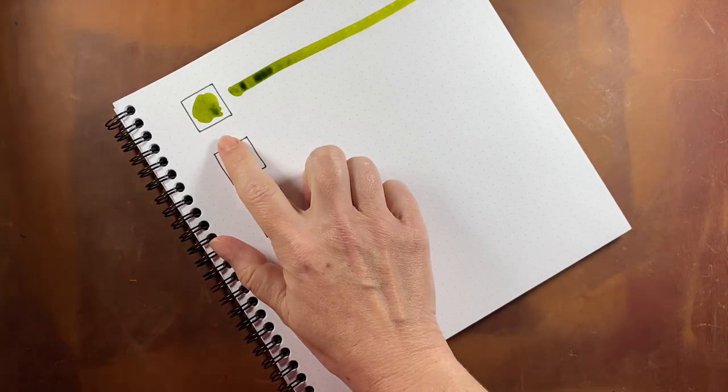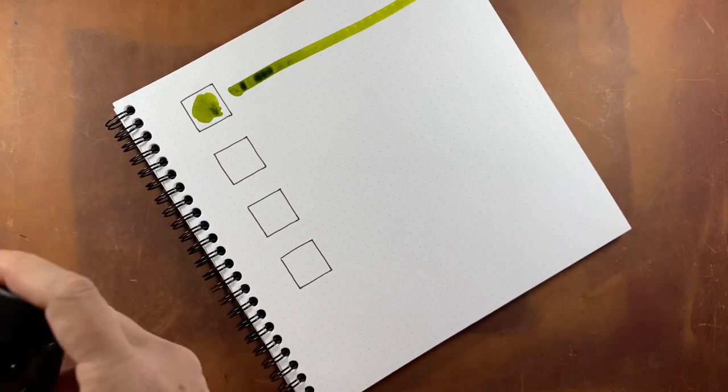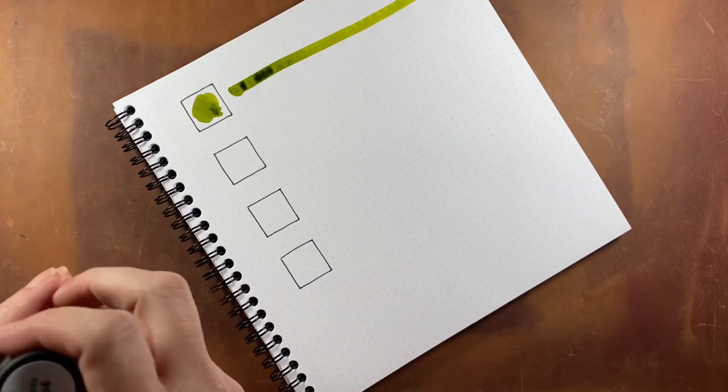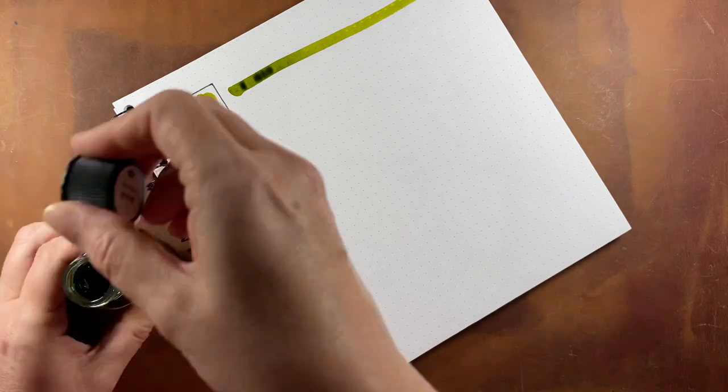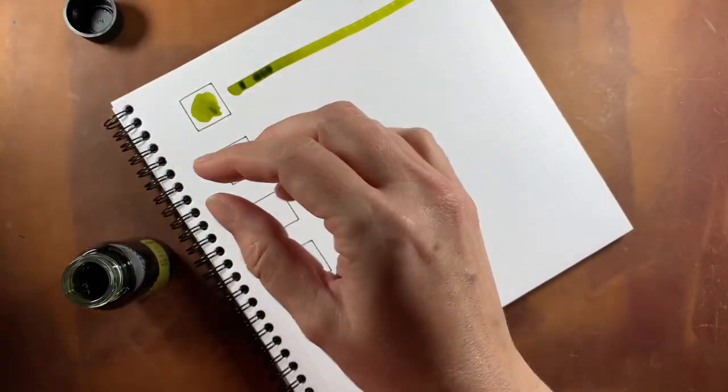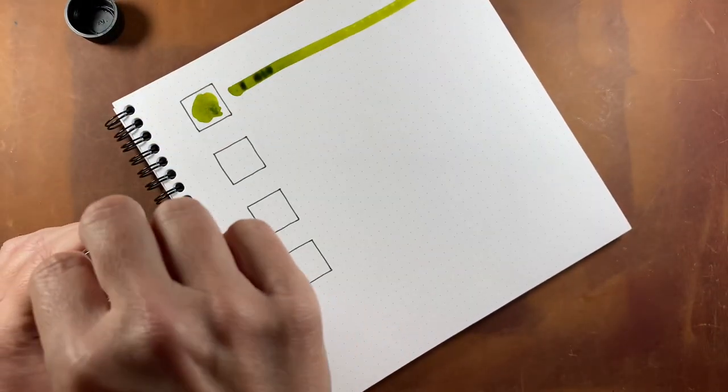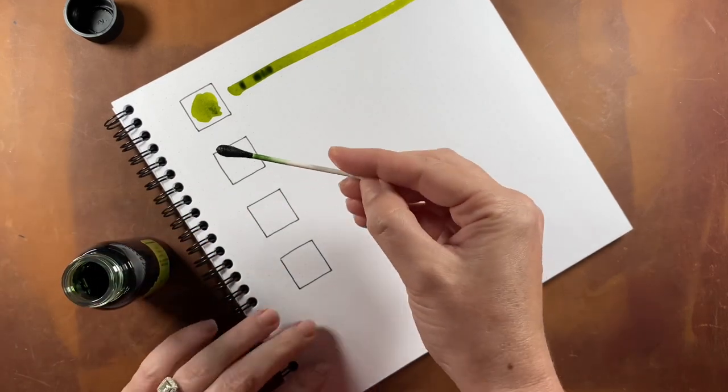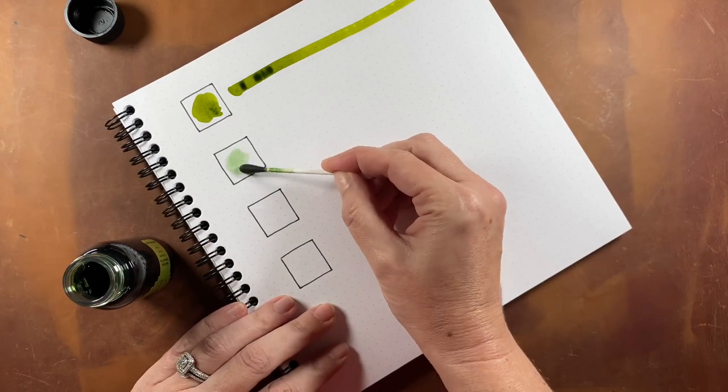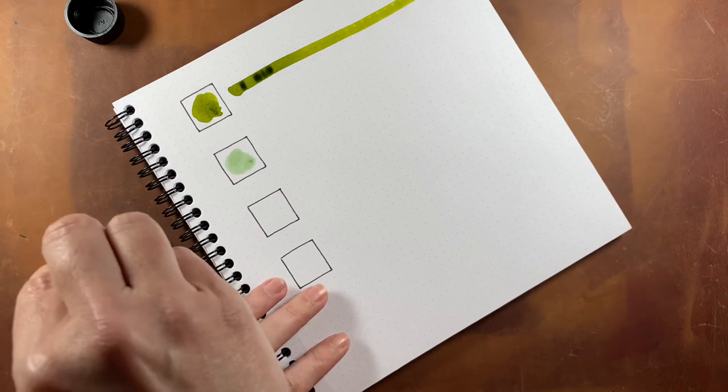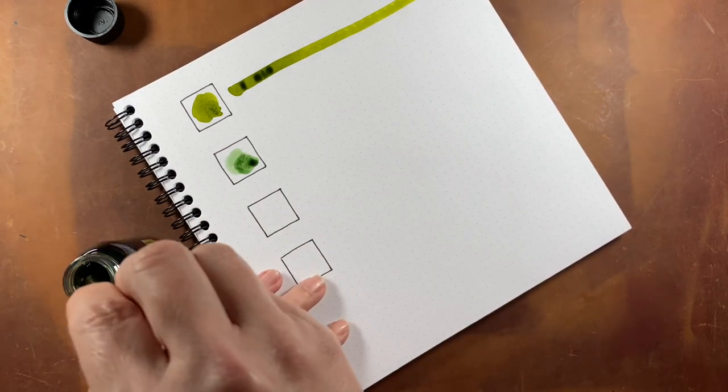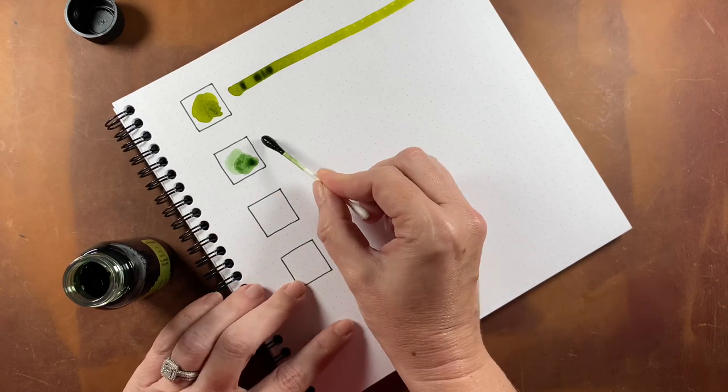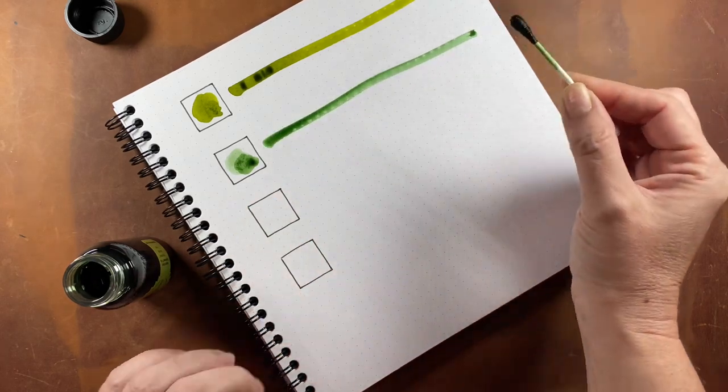But this is the chartreuse, what it looks like. And then we're going to move into a little darker shade in the green family. This is called Avocado. Here's what the swab looks like.